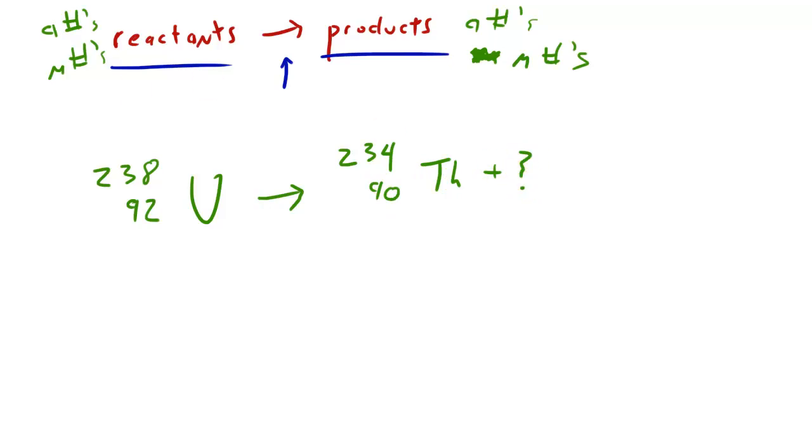Well, what you want to do is you want to find out what this other element is. So what you need to do is say, okay, 238 minus 234 is 4 and 92 minus 90 is 2. So 4, 2, we know that any element with two protons is called helium.